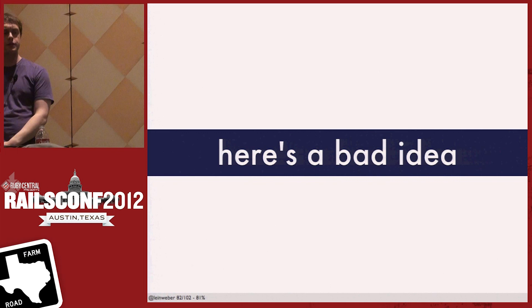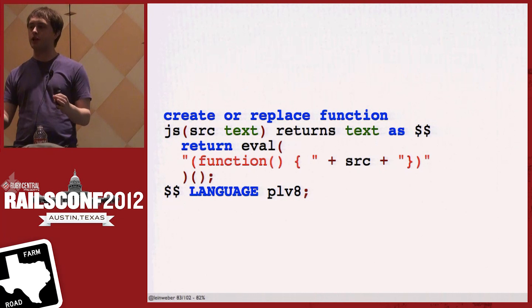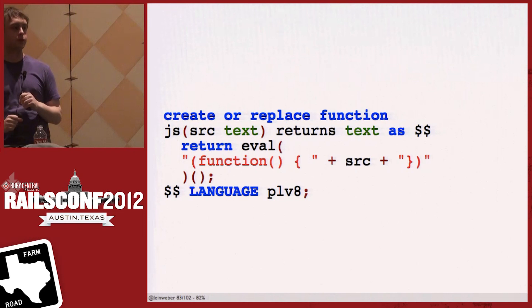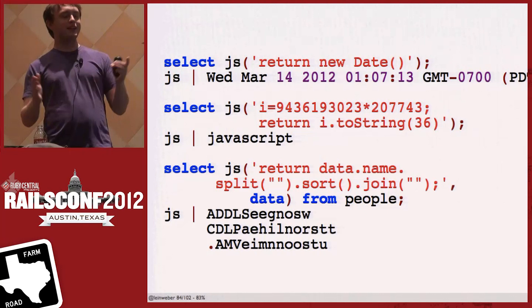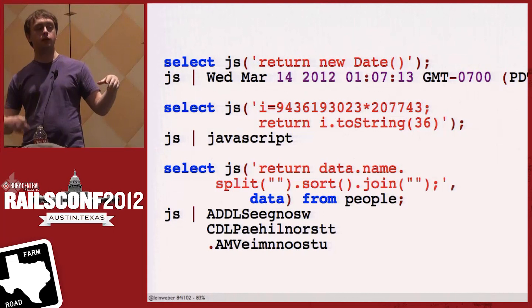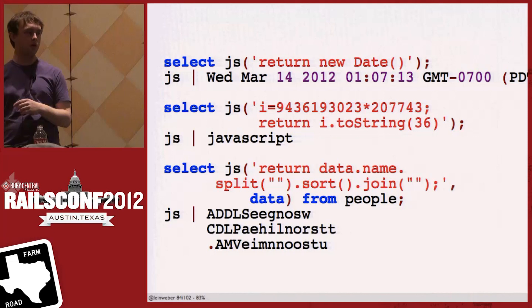Here's a bad idea: a function that takes arbitrary JavaScript source code, evals it, and immediately executes it. With this you can finally not only have SQL injections, you can have JavaScript-and-SQL injections. But it's sort of cool — you can return new Date(), return a large number as a string, or mash around your data in the query: splitting names by characters, sorting them, and joining them back together. Pretty much anything.